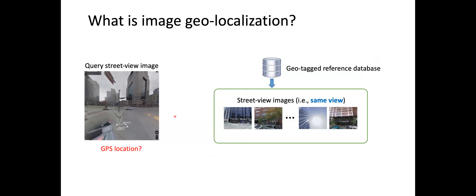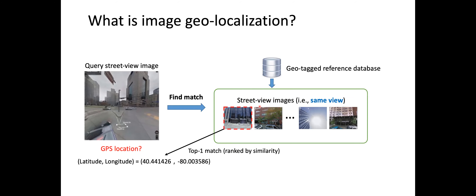Image geolocalization has two typical settings. One is same-view geolocalization: for a query street view image, we have a reference database from the same ground view, where all reference images have a GPS tag. We find a match from this reference database, and use the GPS tag of the top-one match as the prediction for the query.